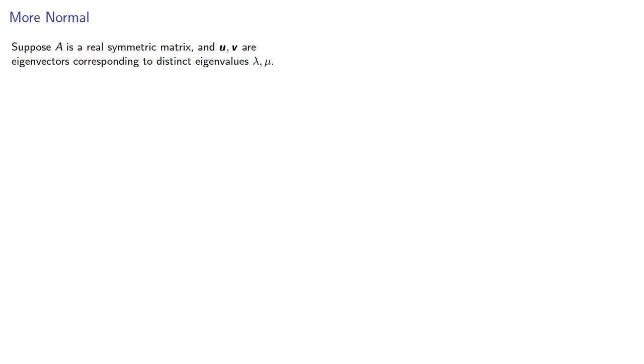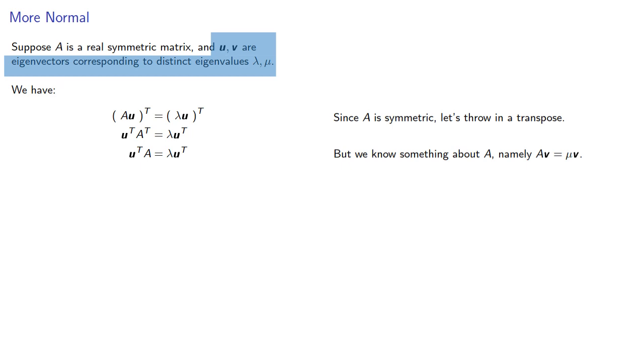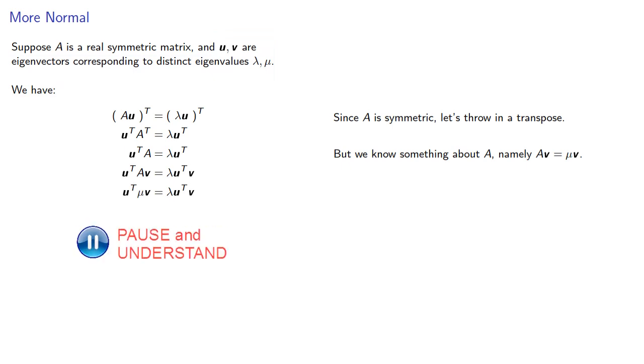suppose A is a real symmetric matrix and u and v are eigenvectors corresponding to distinct eigenvalues lambda and mu. Again definitions are the whole, you know the rest of it. We know that Au is lambda u, and since A is symmetric, let's throw in a transpose. Again, since A is symmetric, its transpose is itself, and we know something about A. We know that Av is mu v, because remember v was an eigenvector of A corresponding to the eigenvalue mu. So let's right multiply by v, and we get, we'll float that constant to the front.